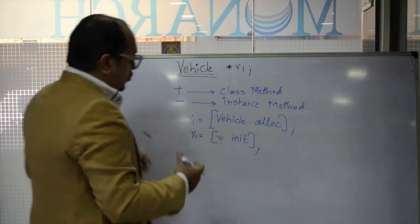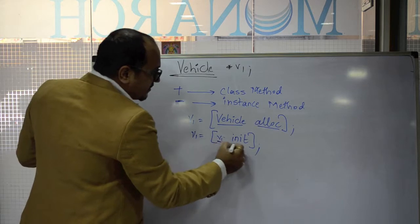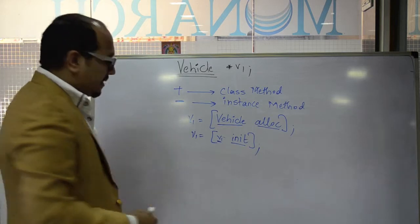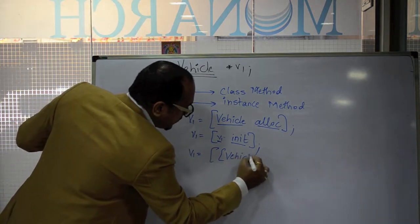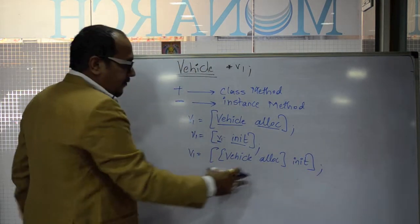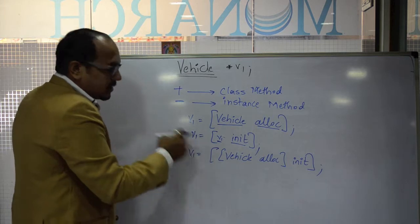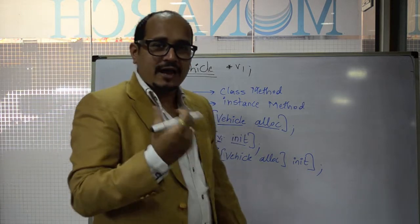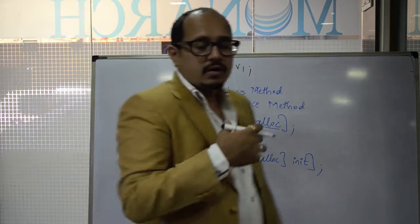Vehicle is the receiver for alloc, so alloc is a class method, whereas v1 is the receiver for init, making init an instance method. We can chain these two statements together, writing: vehicle alloc init. The object is created by vehicle alloc, that instance is initialized, and the id is sent back to v1. There will always be at least one class method called alloc and at least one default instance method called init declared in NSObject.